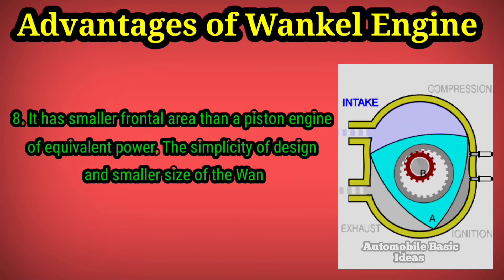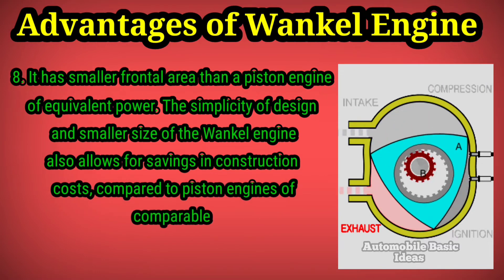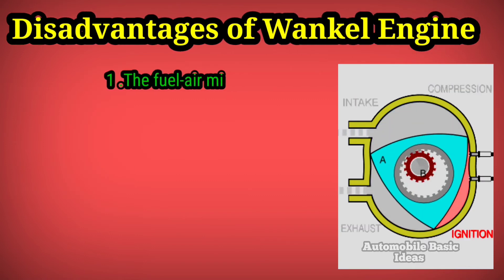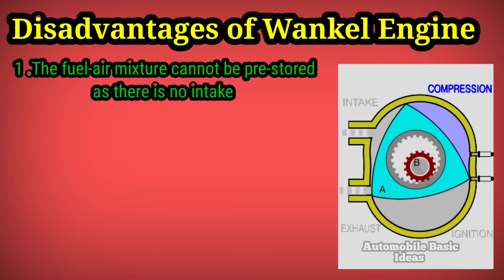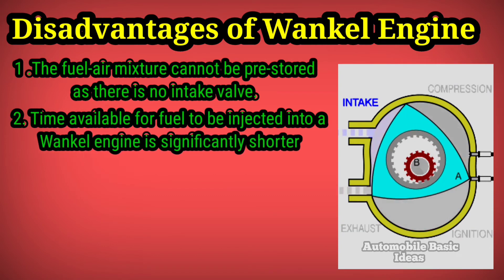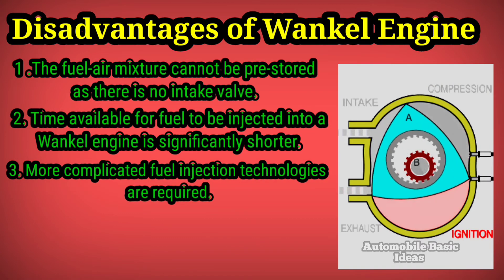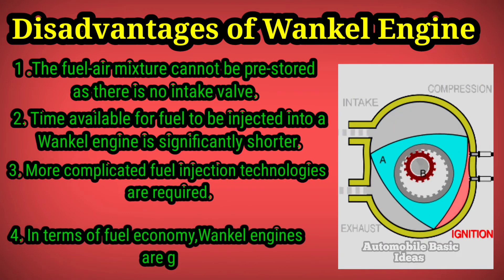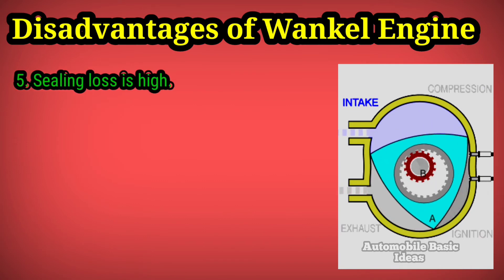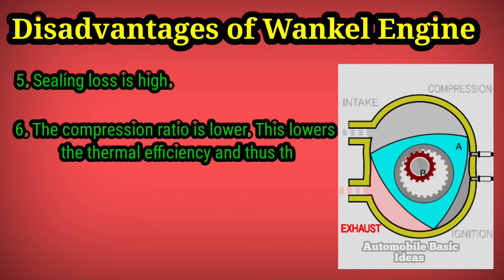The Wankle engine also has a smaller frontal area than a piston engine of equivalent power. Its simplicity and smaller size allow for savings in construction costs compared to piston engines of comparable power output. Disadvantages include: the fuel-air mixture cannot be pre-stored as there is no intake valve; time available for fuel injection is significantly shorter; more complicated fuel injection technologies are required; and Wankle engines are generally less fuel-efficient than four-stroke piston engines. Sealing loss is high and the compression ratio is lower, which reduces thermal efficiency and fuel economy.